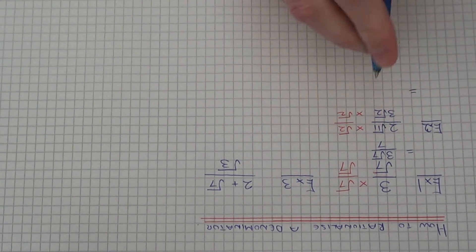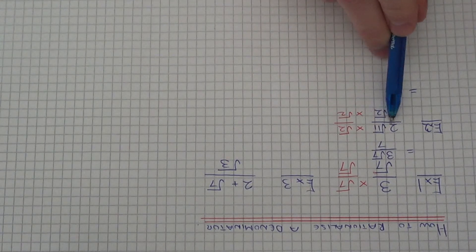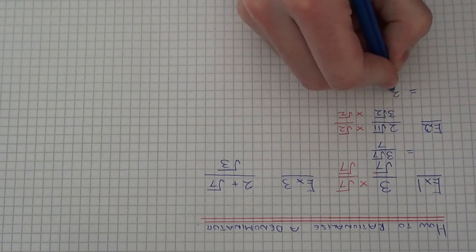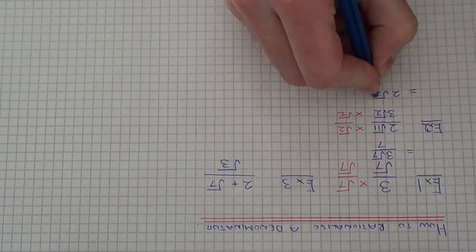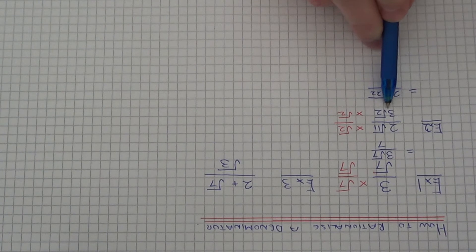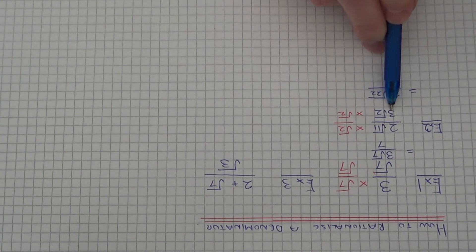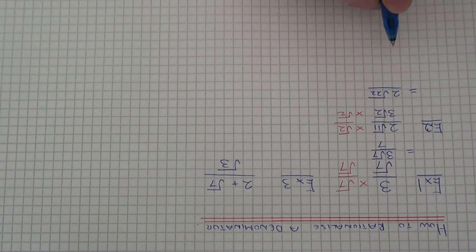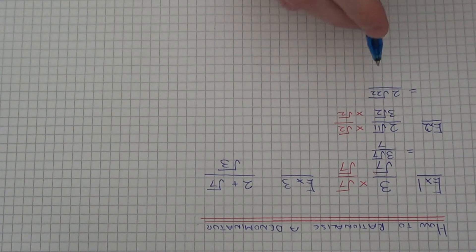OK, so if we multiply the numerator, we'll get 2 root 22. And if we multiply the denominator, we'll get 3 times 2, which is 6. Because root 2 times root 2 is 2.